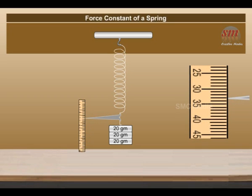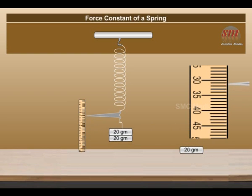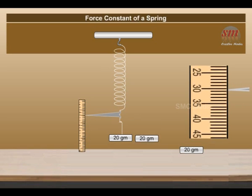The pointer tip moves up. Repeat step 6. Record the reading in unloading column. 9. Repeat step 8 till only hanger is left.